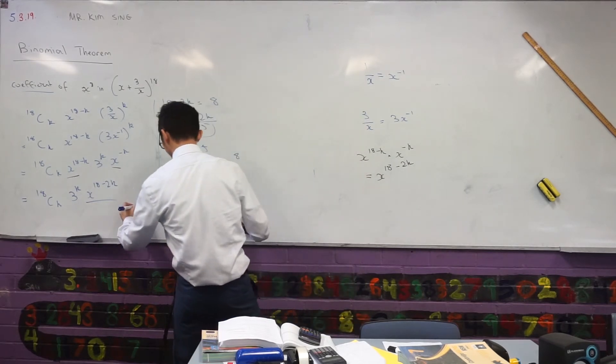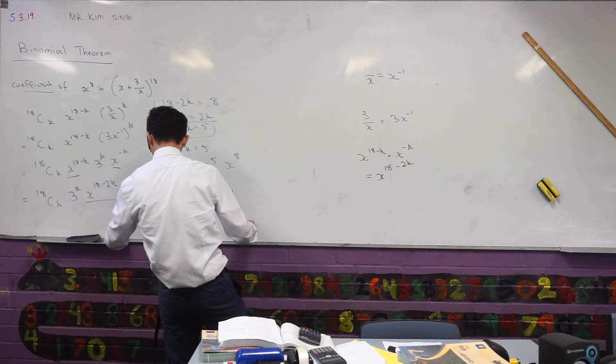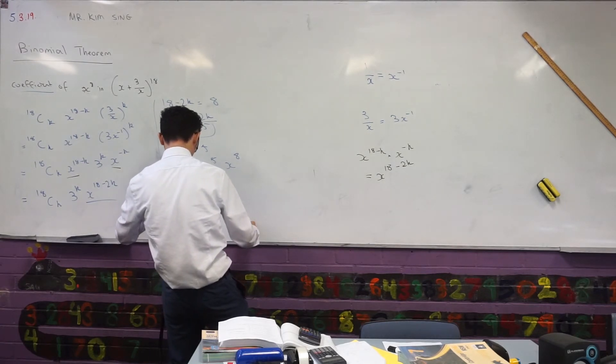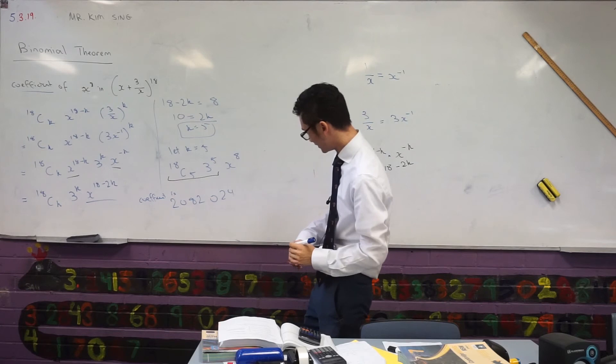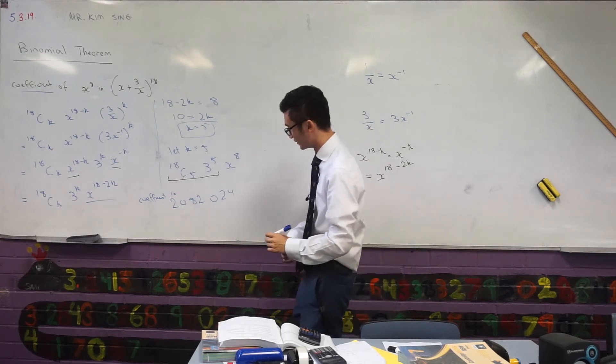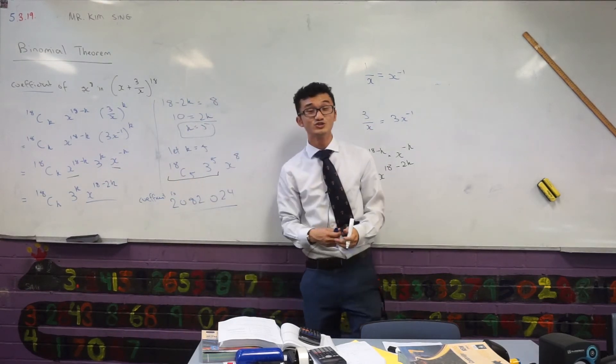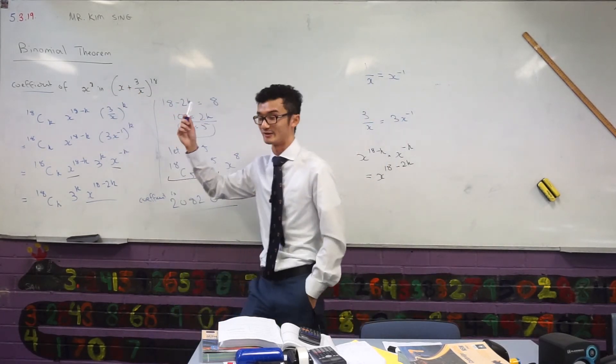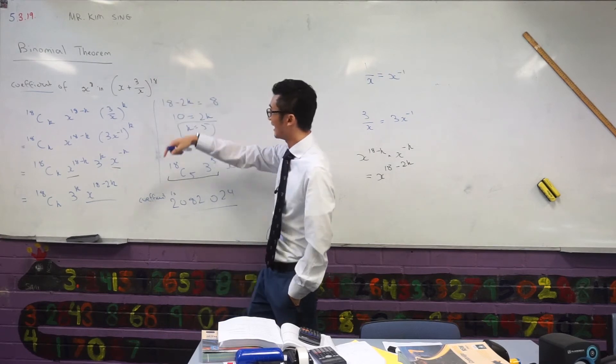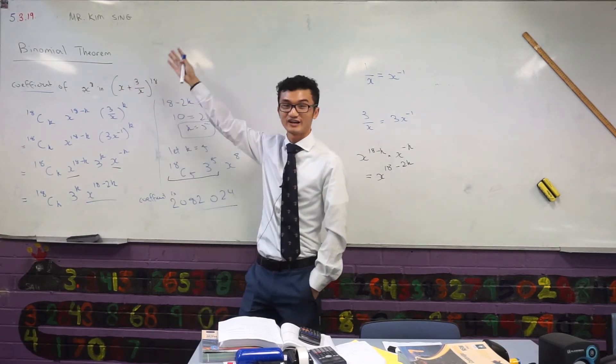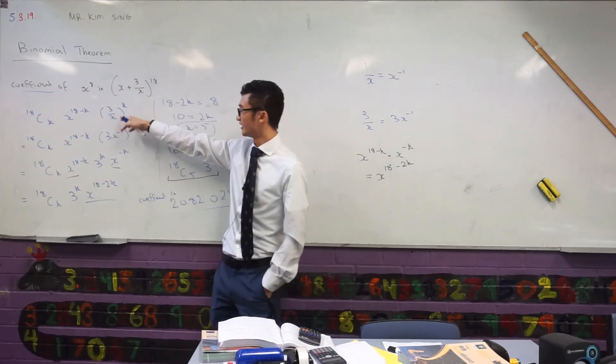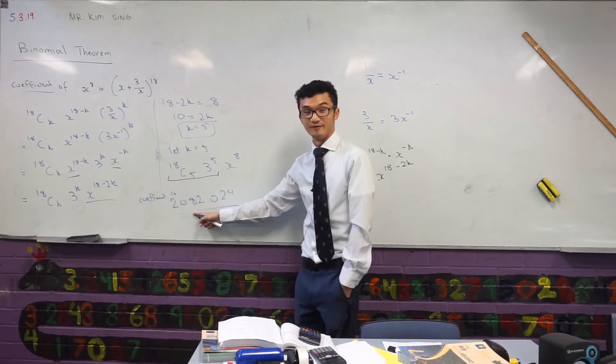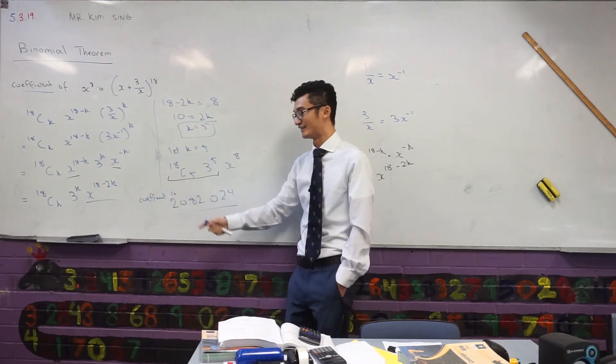So the coefficient is 2,082,024. So that's the answer to this question. And that's how we can use the binomial theorem in order to find the coefficient of any term in any kind of expression, no matter how difficult they are with their high powers or they've got negatives or fractions or whatever they have. Always start off by writing the general term and then you can go from there and choose a k power that lets you find the coefficient.